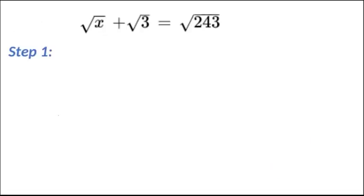So let's get started. We have the square root of x on the left hand side, which is the variable, so we're going to keep that over there. We're going to bring the numbers to the other side, so we get the square root of x equals the square root of 243 minus the square root of 3.